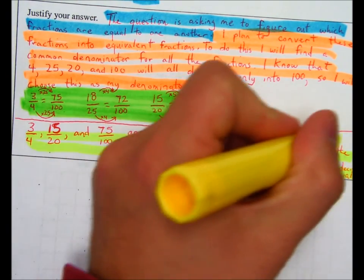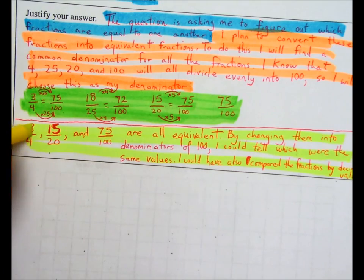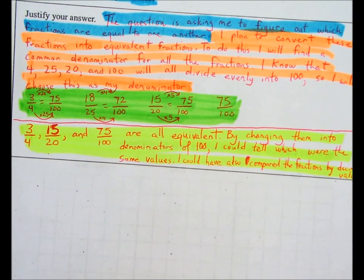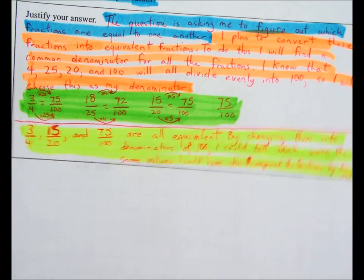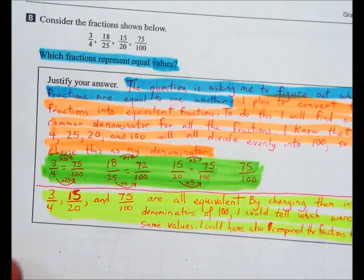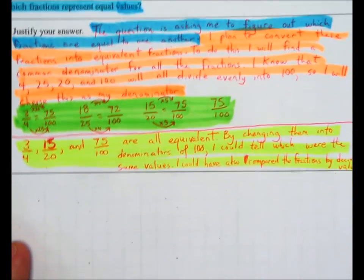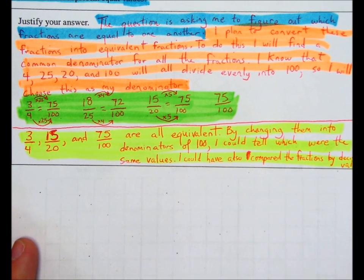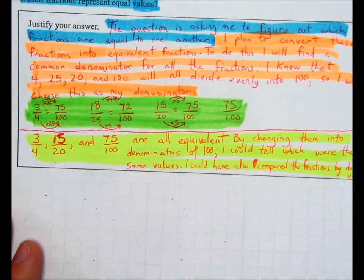And part of step four is making sure you answered the question that was asked. So when you're checking it over, you should always say, did that answer the question I was asked? So the question said, which fractions represent equal values? And then my answer stated, certain fractions are equivalent. So yes, I did answer the question that was asked.